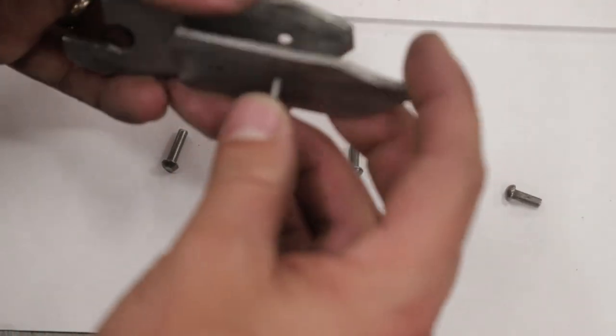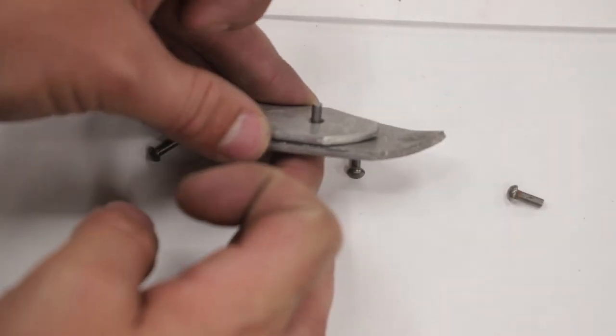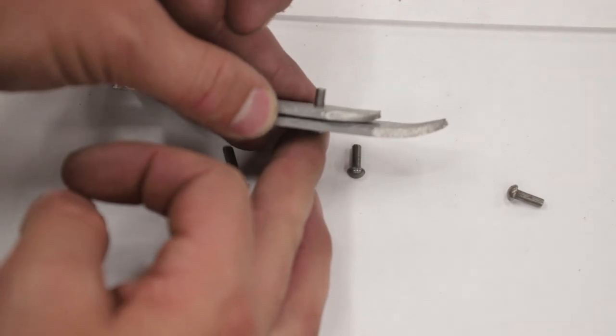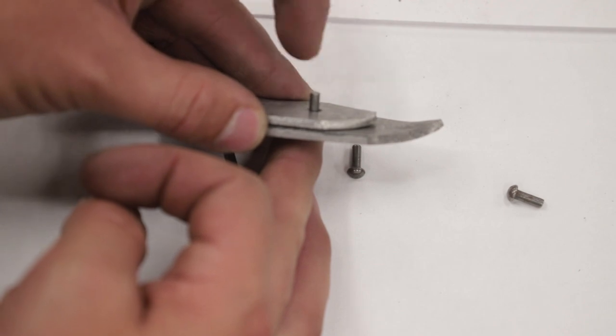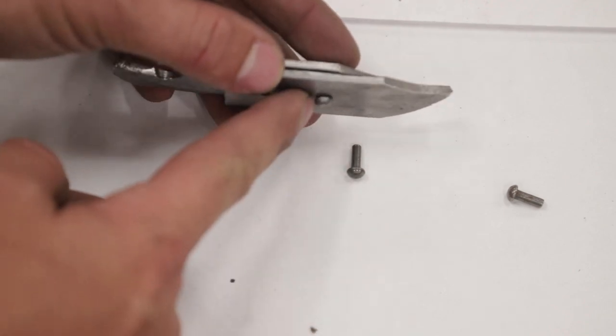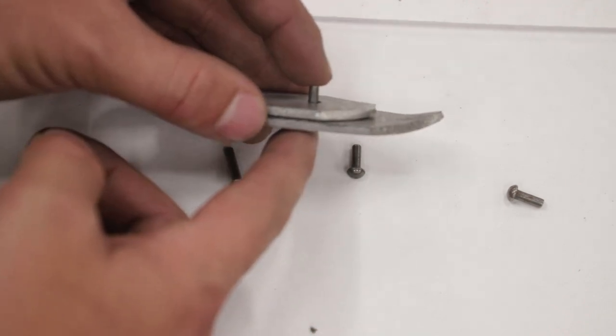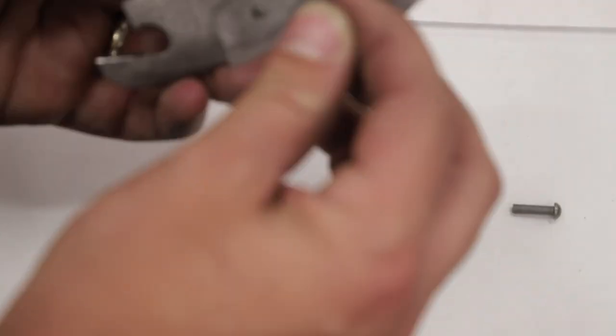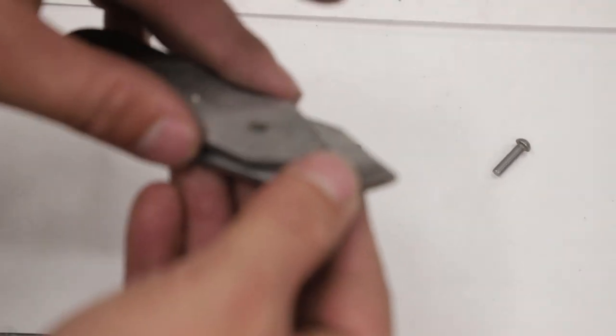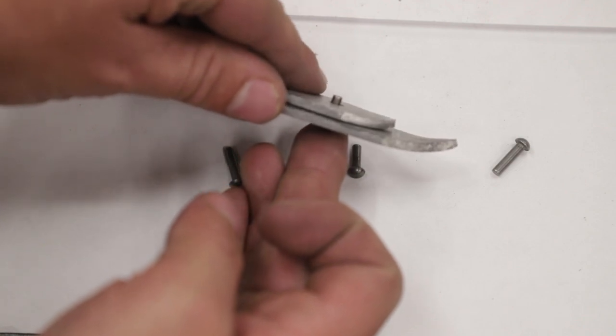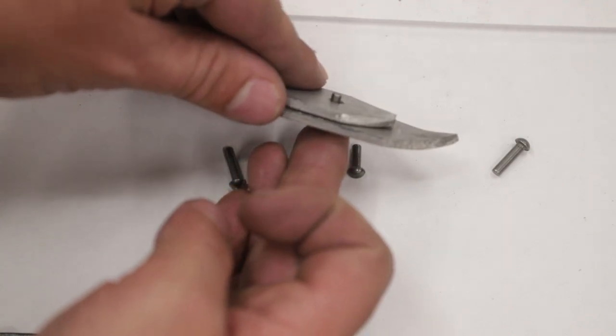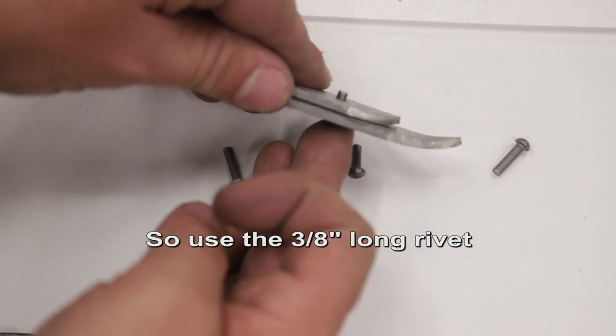The final product will be based on personal preference. When I smack this down, it'll create a little bump or a mushroom similar to the side of this rivet. This will give me a larger bump, maybe more strength. If I use the three eighths, it'll only stick out a little bit, a smaller bump when I'm all done. The three eighths is long enough for this project. So use the three eighths long rivet.